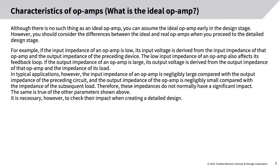For example, if the input impedance of an op amp is low, its input voltage is derived from the input impedance of that op amp and the output impedance of the preceding device. The low input impedance of an op amp also affects its feedback loop. If the output impedance of an op amp is large, its output voltage is derived from the output impedance of that op amp and the impedance of its load. In typical applications, however, the input impedance of an op amp is negligibly large compared with the output impedance of the preceding circuit, and the output impedance of the op amp is negligibly small compared with the impedance of the subsequent load. Therefore, these impedances do not normally have a significant impact. The same is true of the other parameters. It is necessary, however, to check their impact when creating a detailed design.